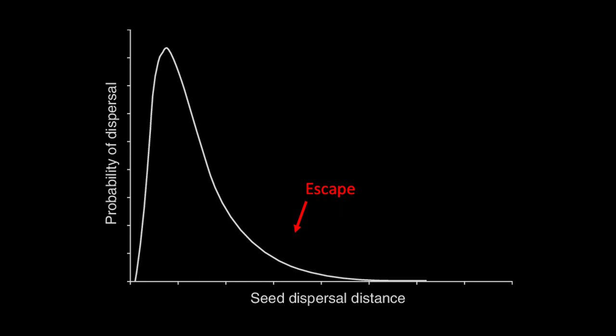Most seeds do not disperse very far away from the parent plant — that's the whole driving cause behind the negative density-dependent effects. This is something called a dispersal kernel, representing the probability of how far a seed will travel any given distance, which differs depending on the plant. As you can see, most seeds are going to disperse a very short distance from the parent plant, so most are not going to escape. The idea behind the escape hypothesis is just that enough seeds will get away via dispersal to escape these effects and have a chance at survival.